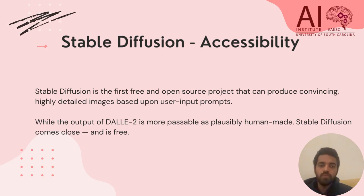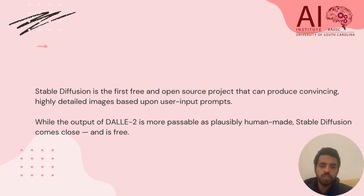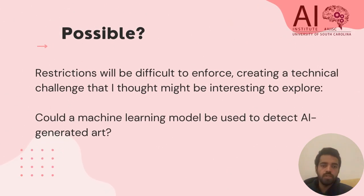Stable Diffusion is one example, which is a free, open-source text-to-image generation model that generates images based on user input prompts. With the output of DALL-E, restrictions will be difficult to enforce, creating a technical challenge that I thought might be interesting to explore.